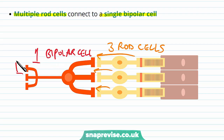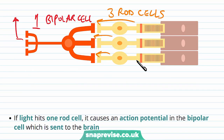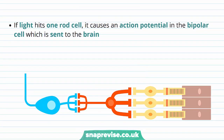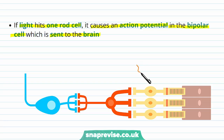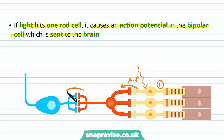From the bipolar cell, the information goes on to the brain. If the light levels are very low and light hits one of these rod cells, it causes an action potential in that rod cell, then an action potential in the bipolar cell, which is sent to the brain. So a low level of light hits, say, rod cell number one; the rod cell sends an action potential to the bipolar cell, which sends an action potential to the ganglion cell, and this goes up to the brain.